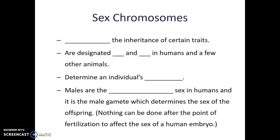So let's talk about the sex chromosomes. They determine the inheritance of certain traits. They are designated as X and Y in humans and a few other animals as well. Most mammals use XY sex determination, as do fruit flies and some other invertebrates. Birds on the other hand have a different method of sex determination, and reptiles are even different still. In humans, these sex chromosomes determine an individual's biological sex.